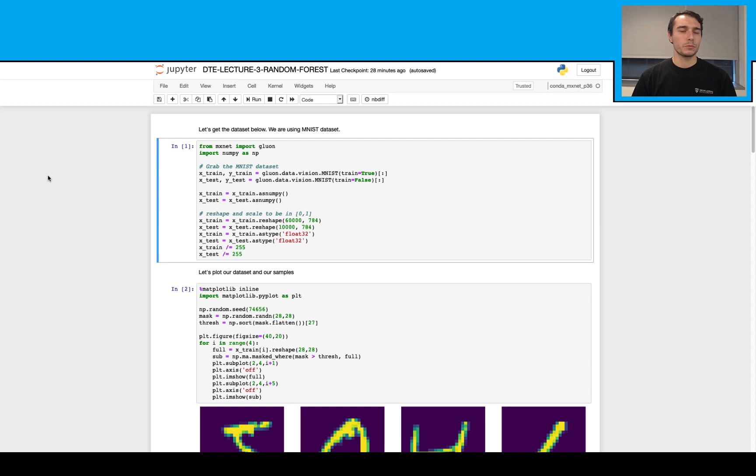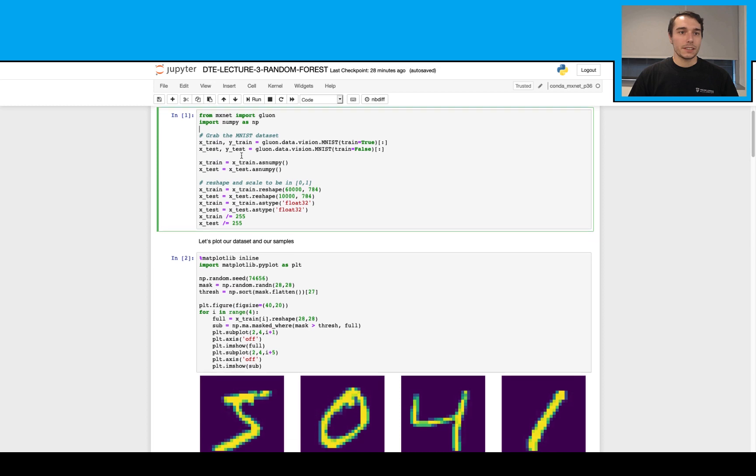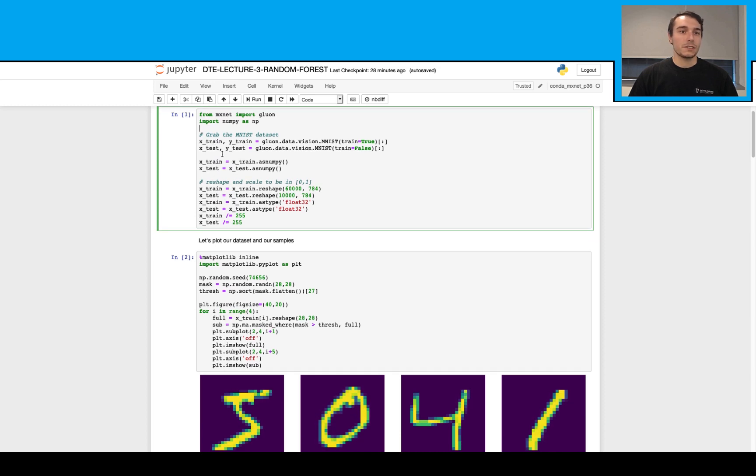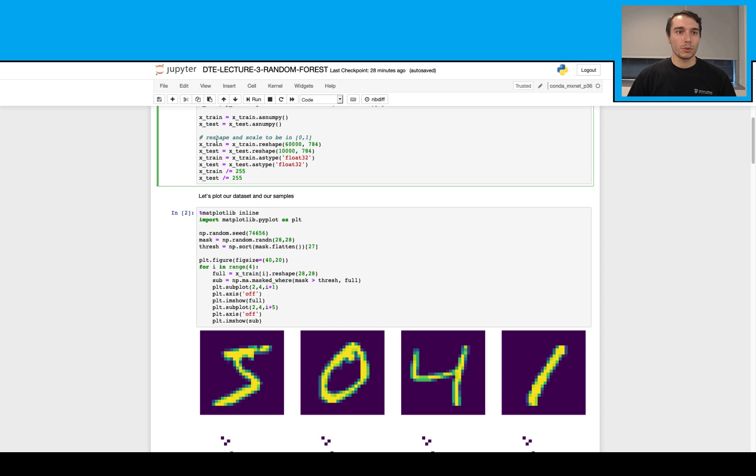Let's look at our notebook together. In this notebook, we are going to use the MNIST dataset. So let's import this MXNet Gluon library here first to get this dataset. Here I'm getting the dataset in terms of training and test here.